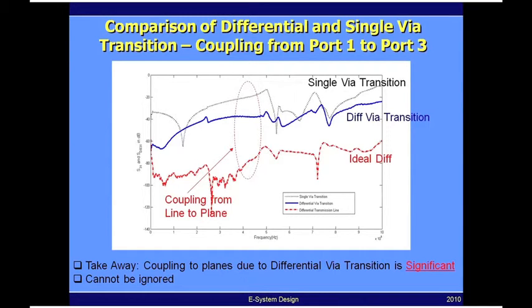I show three curves here. The black curve is what we did in segment three, corresponding to single-ended signaling. As you can see, there's around minus 20 to minus 15 dB of coupling, which causes degradation in the waveform when you go from the input to the far end of the microstrip line.